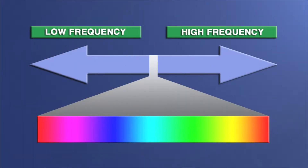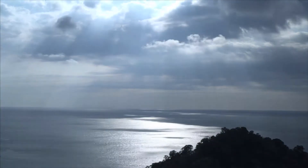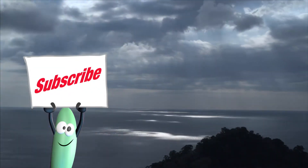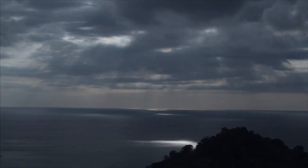All electromagnetic waves travel at the same speed, but have different wavelengths and frequencies. The electromagnetic spectrum is made up of radio waves, infrared rays, visible light, ultraviolet rays, X-rays, and gamma rays. As you can see, light waves fall somewhere in the middle of the spectrum. The fact that you can see light waves is very important — that's one way they are different from all the other electromagnetic waves. They are visible.